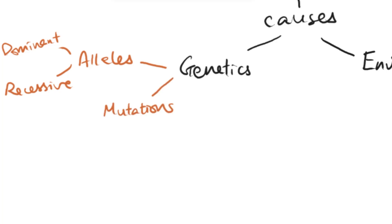Another thing that causes differences in genes would be mutations. A lot of times this could be a random mutation — just a replication error or something like that. Sometimes it could be caused by mutagens or carcinogens as well, such as ionizing radiation, which is an example.